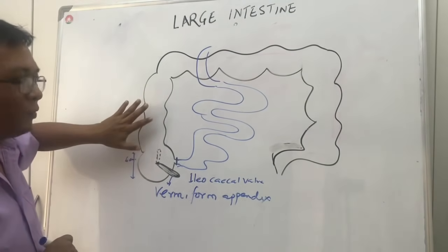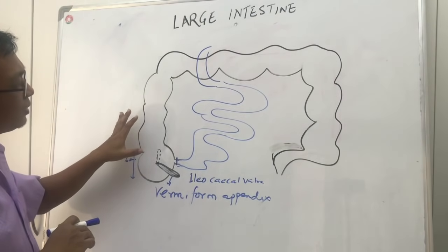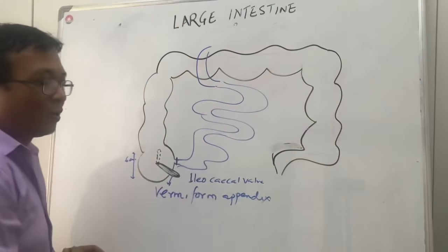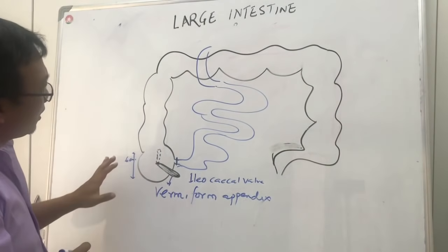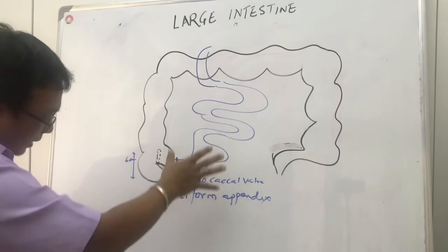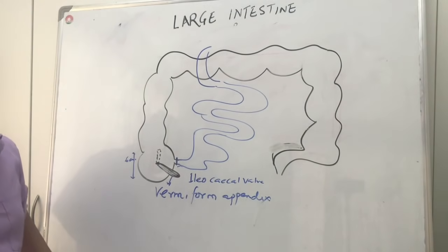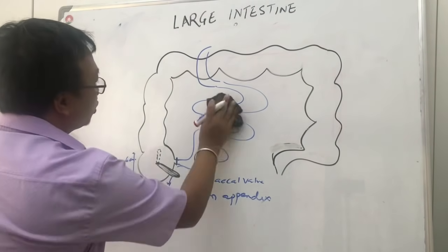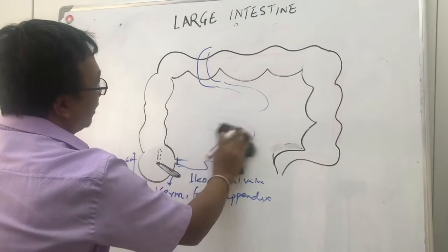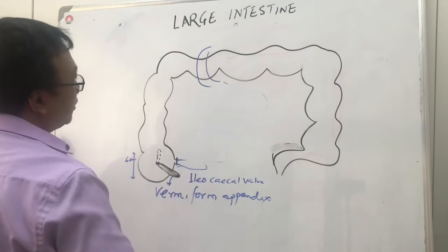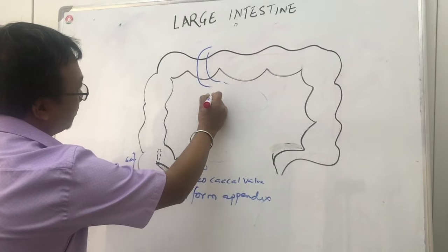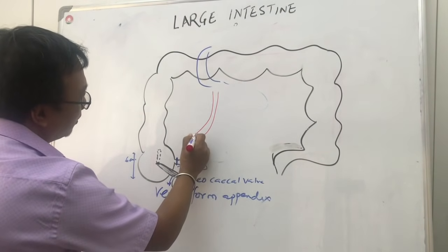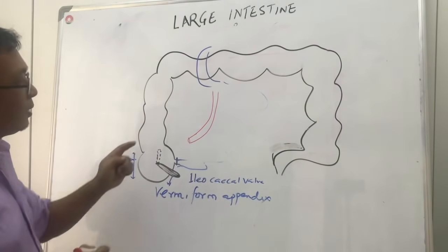The food bolus mostly hardens from the transverse colon onwards. Anatomically, the blood supply of the large intestine is based on the superior mesenteric artery and inferior mesenteric artery. The superior mesenteric artery comes out of the aorta and goes to the right.